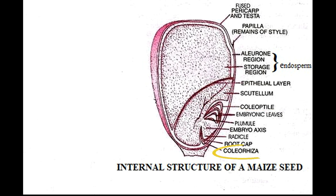Next we have the coleorhiza. It is the undifferentiated sheath which encloses the radicle and root cap in a monocot seed.